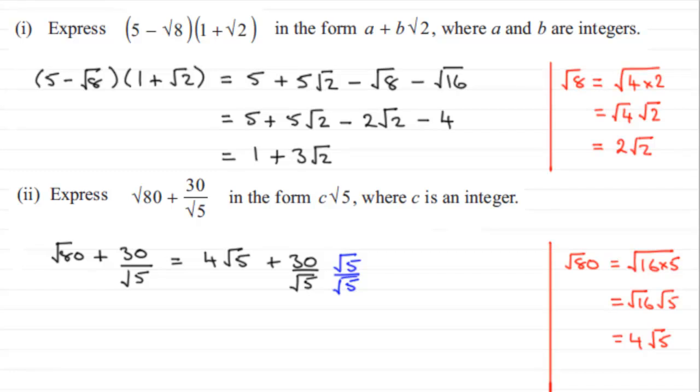So what do we get? If we work this out, keep the first term as 4√5, and then for the second term we've got 30√5. On the bottom, we've got √5 times √5, which is √25, or simply 5. You'll see that 5 goes cleanly into 30 six times. So we've got 4√5 + 6√5, which is 10√5. We've got this in the form c√5, where c = 10, an integer.